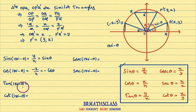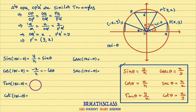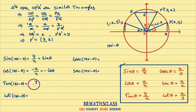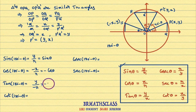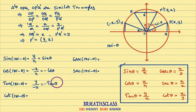Now, tan(180 degrees minus theta). As per the definition, tan theta is defined as y coordinate divided by x coordinate of the point. Tan(180 degrees minus theta) means y coordinate of S, which is y, divided by x coordinate of S, which is minus x. That is nothing but minus y by x. Since y by x is tan theta, tan(180 degrees minus theta) equals minus tan theta.